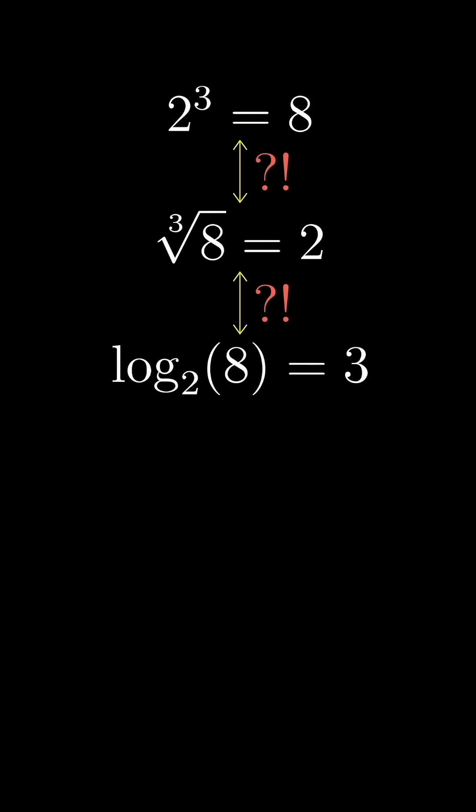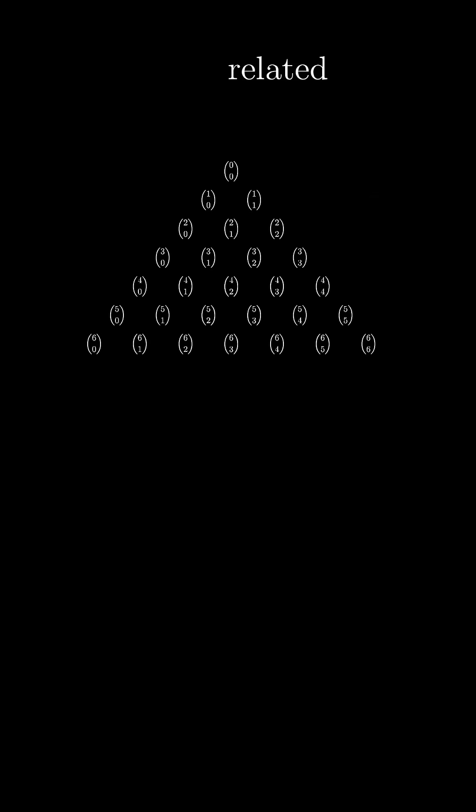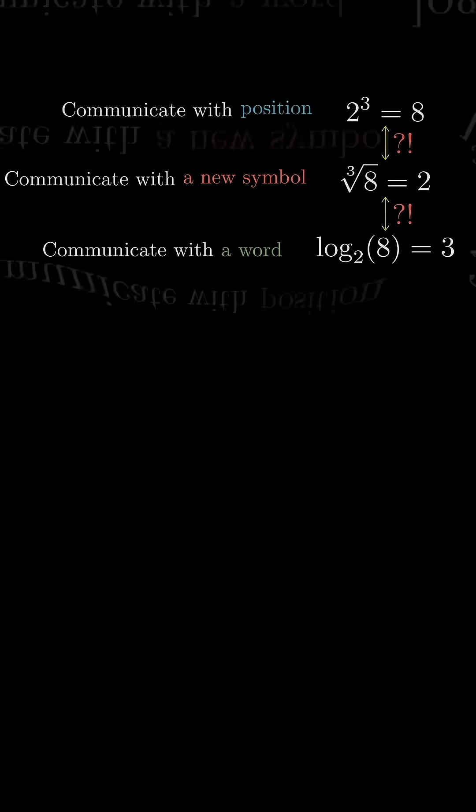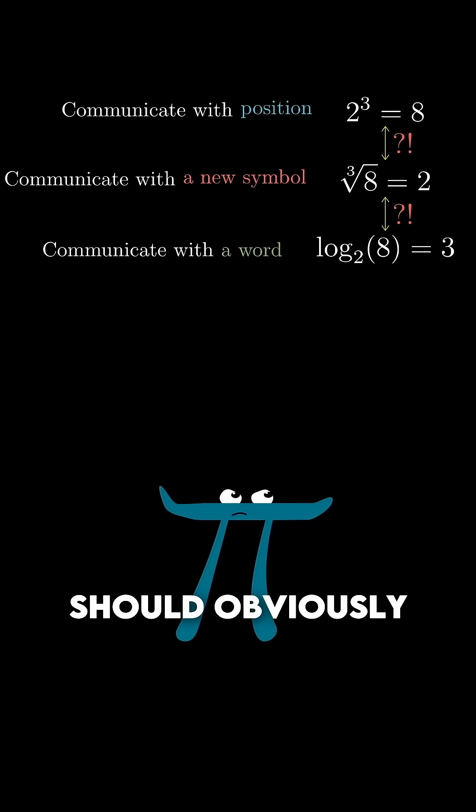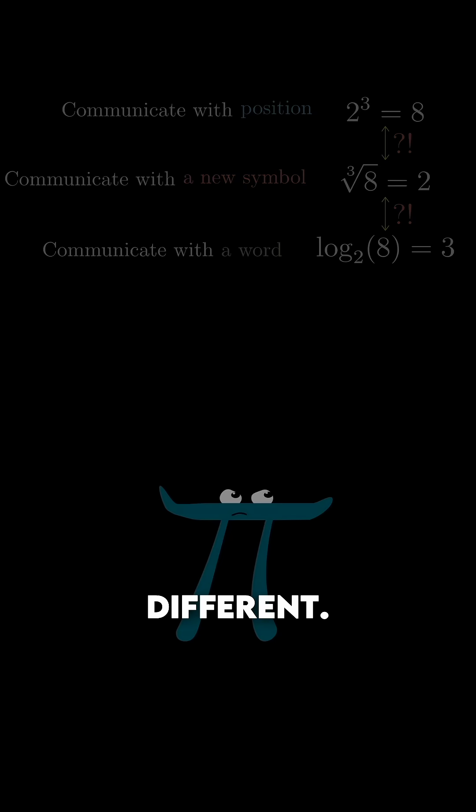This weird discrepancy in notation isn't just counterintuitive, I think it's counter mathematical. Rather than making seemingly different facts look the same, which is what math should do, it makes three facts that should obviously be the same look artificially different.